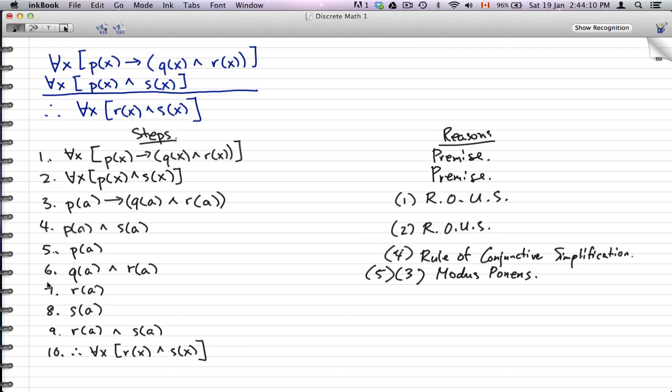Now for seven, what we have here is we're using six, we're using six, and what we're going to use here is a script—it's going to use a rule of conjunctive simplification.